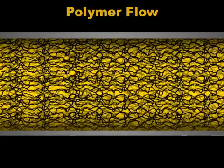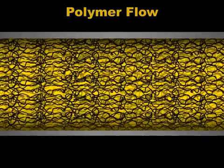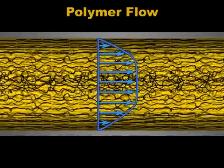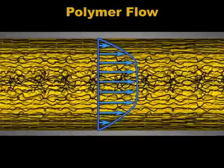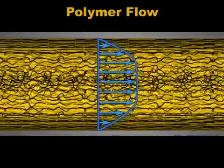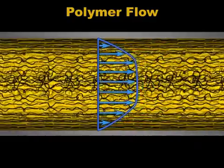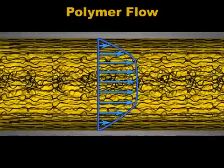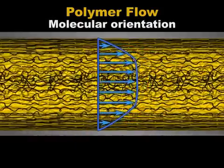When polymer molecules flow through a sheet die, the molecules nearest the die walls flow slower than those further in, as shown by the arrows on this graph. Any differences in the flow speed of molecules that are next to each other force them to become aligned in the flow direction. This alignment of molecules, caused by flow, is the cause of molecular orientation.